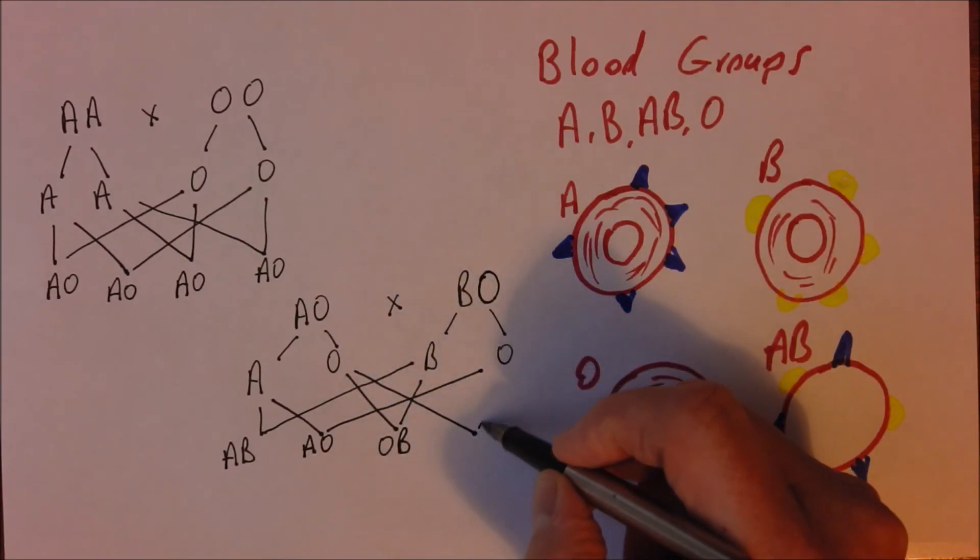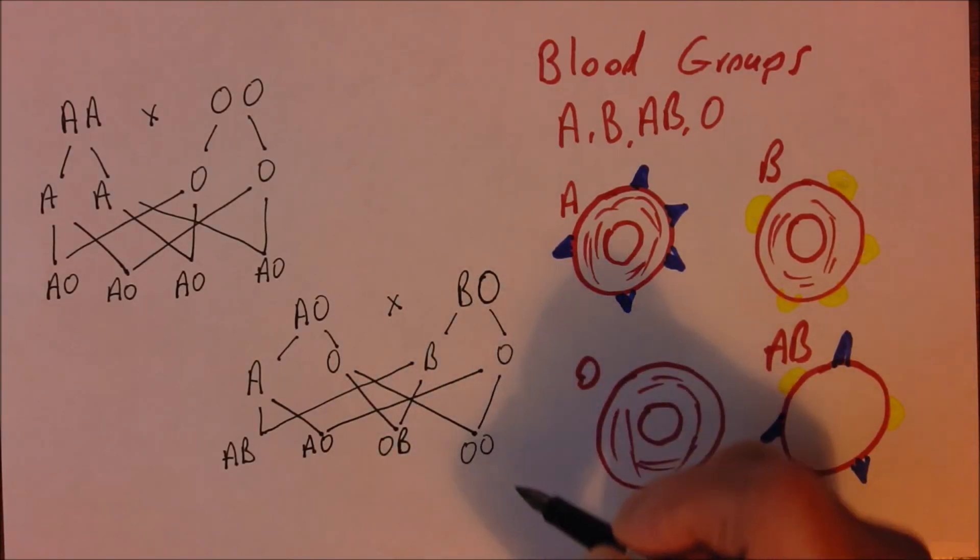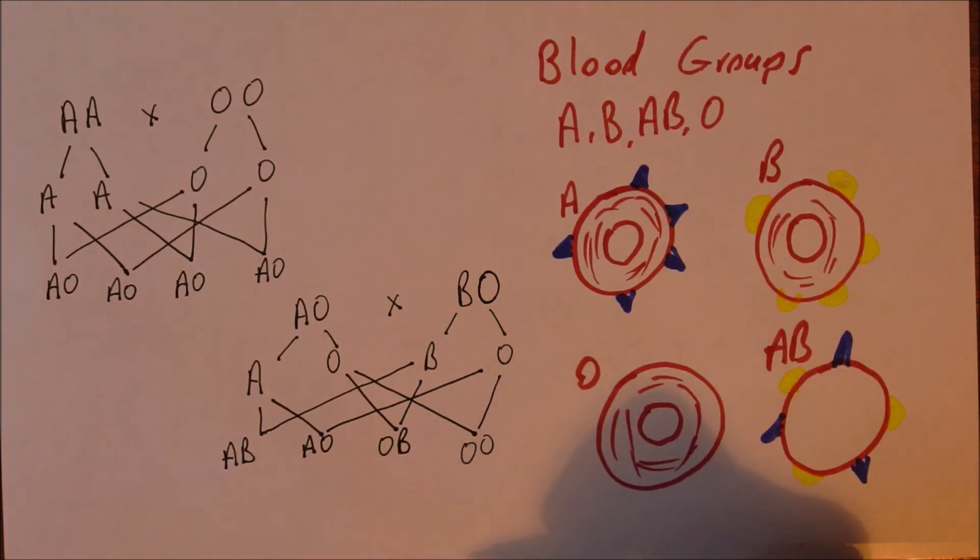Those two could also come together giving us OO. And because there is no dominant gene present, the blood group O, the recessive gene, will be expressed in the phenotype and that person will be blood group O.